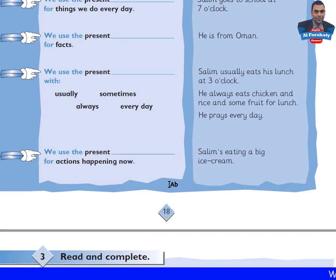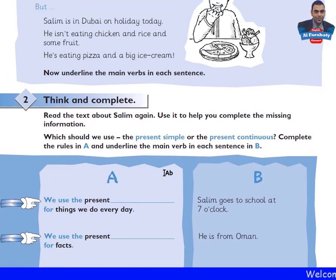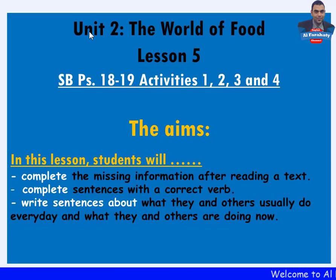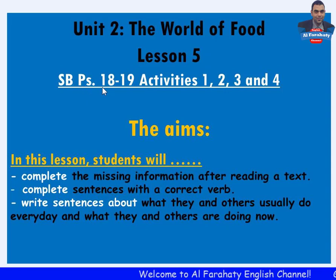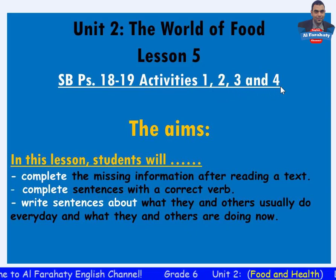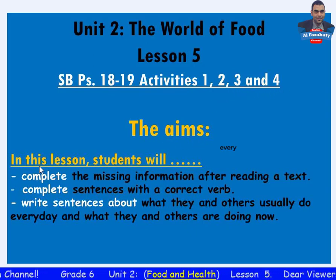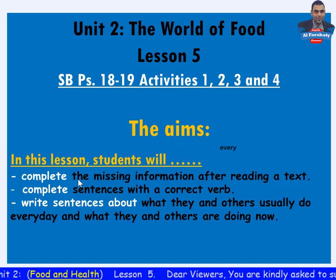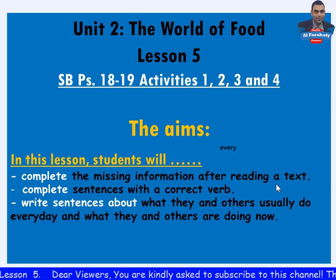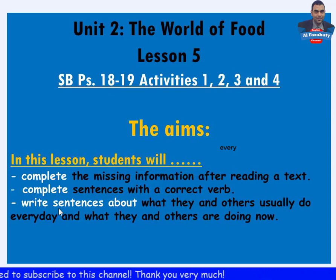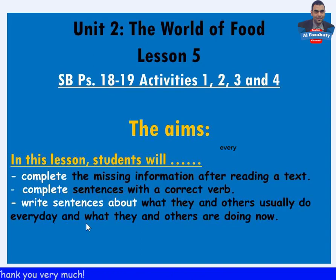What are the aims of this lesson? Let's check. Unit 2, the world of food, lesson 5, skills book pages 18 and 19, activities 1, 2, 3 and 4. The aims: in this lesson students will complete the missing information after reading a text, complete sentences with the correct verb, write sentences about what they and others usually do every day, and what they and others are doing now.